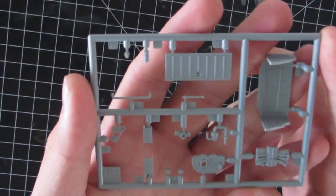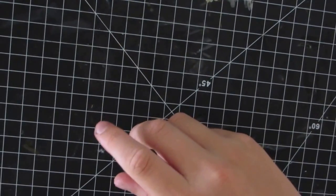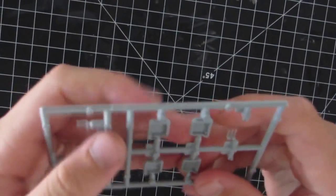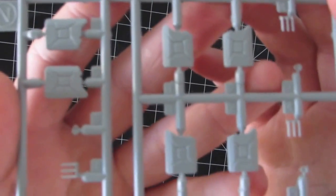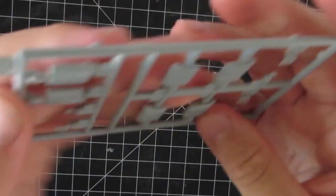That's the engine sprue. There are the jerry cans. Nice, nice as always.